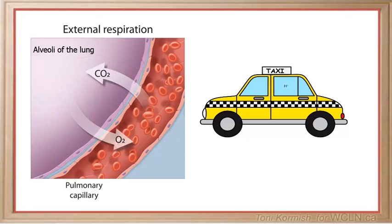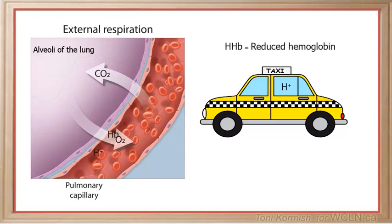Excess hydrogen ions are also carried to the lungs by hemoglobin. When hydrogen ions bind to hemoglobin, a molecule called reduced hemoglobin is formed. When reduced hemoglobin reaches the lungs, the hydrogen ion is released from the hemoglobin molecule and hemoglobin is now free to pick up oxygen.